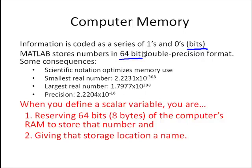The consequences of that are that the smallest real number that you can have in MATLAB is 2.2231 times 10 to the minus 308, a pretty small number. The largest real number is 1.7977 times 10 to the 308, and these are actually stored in MATLAB variables, special variables called real min and real max. The precision is 2.2204 times 10 to the minus 16. The precision means we have some error here that can be introduced because sometimes we can't use those ones and zeros to get an exact representation of the decimal number.